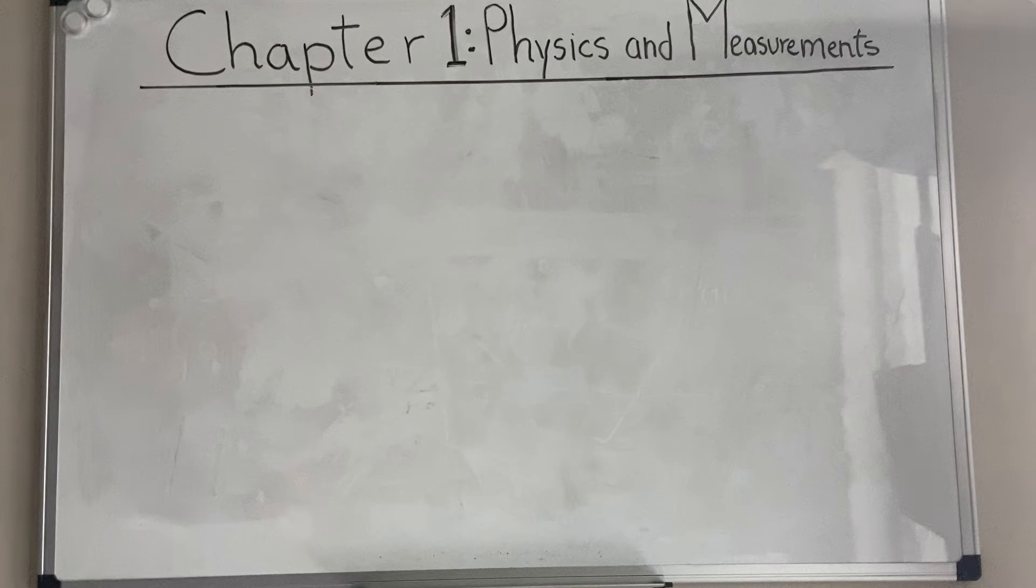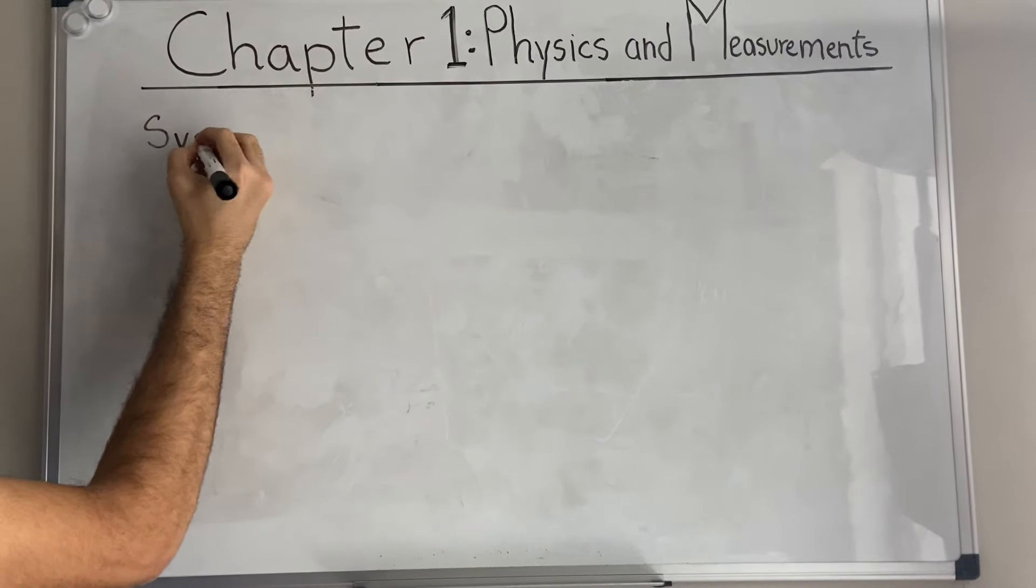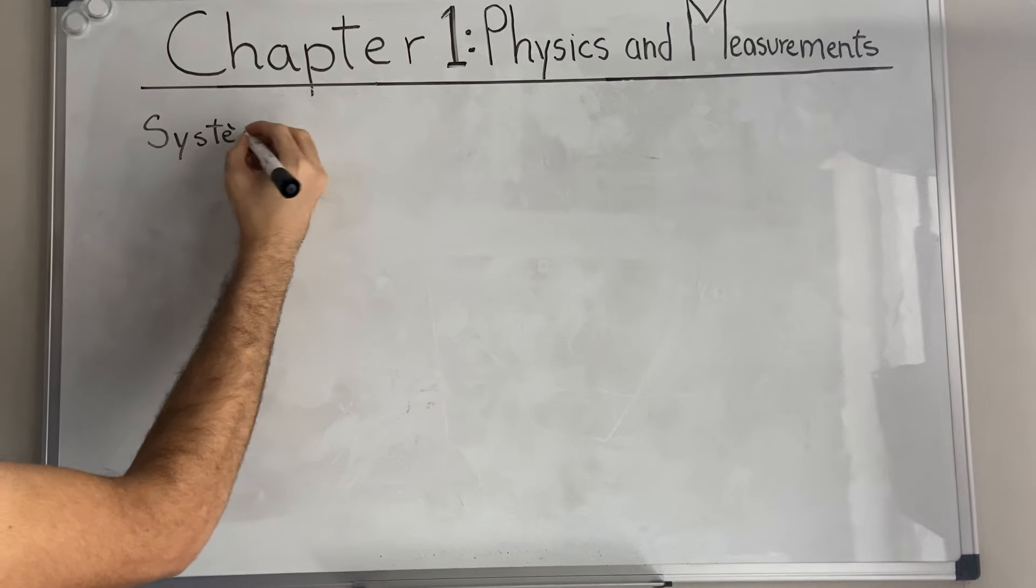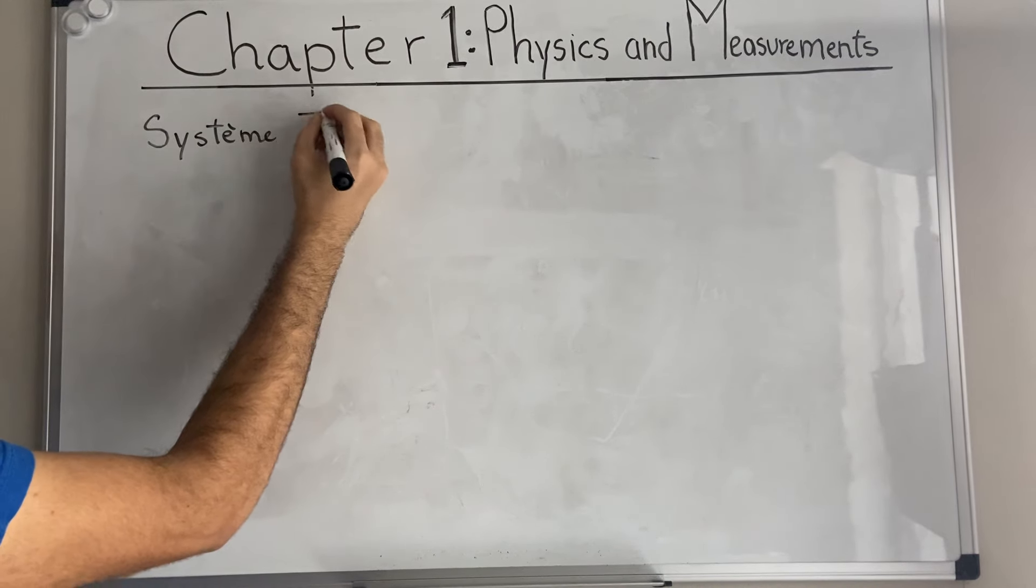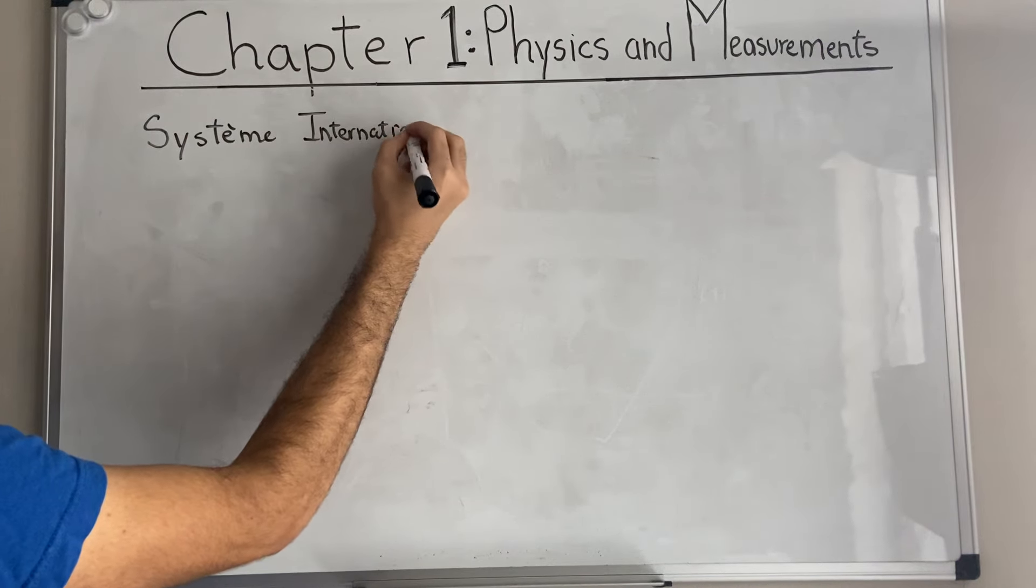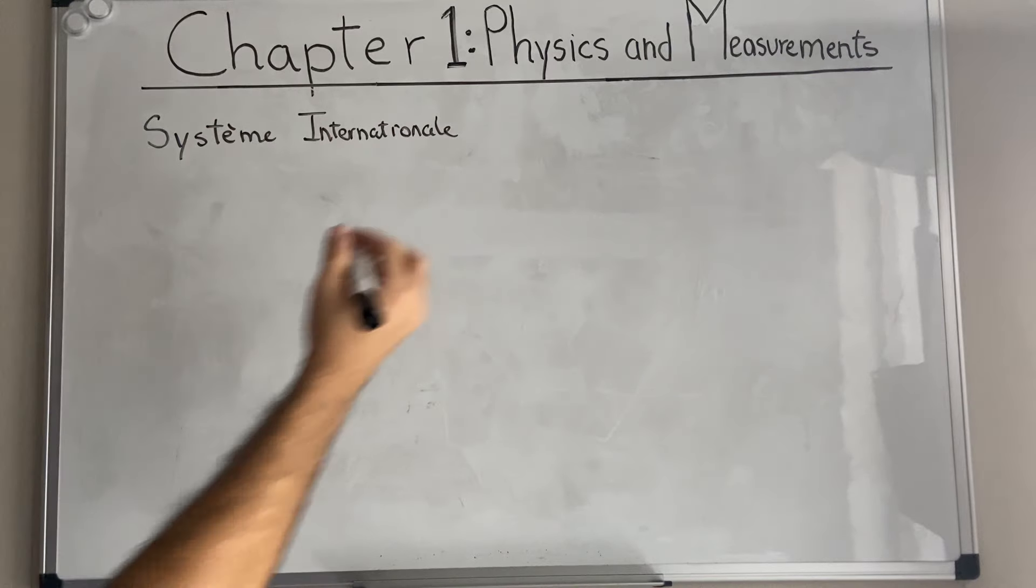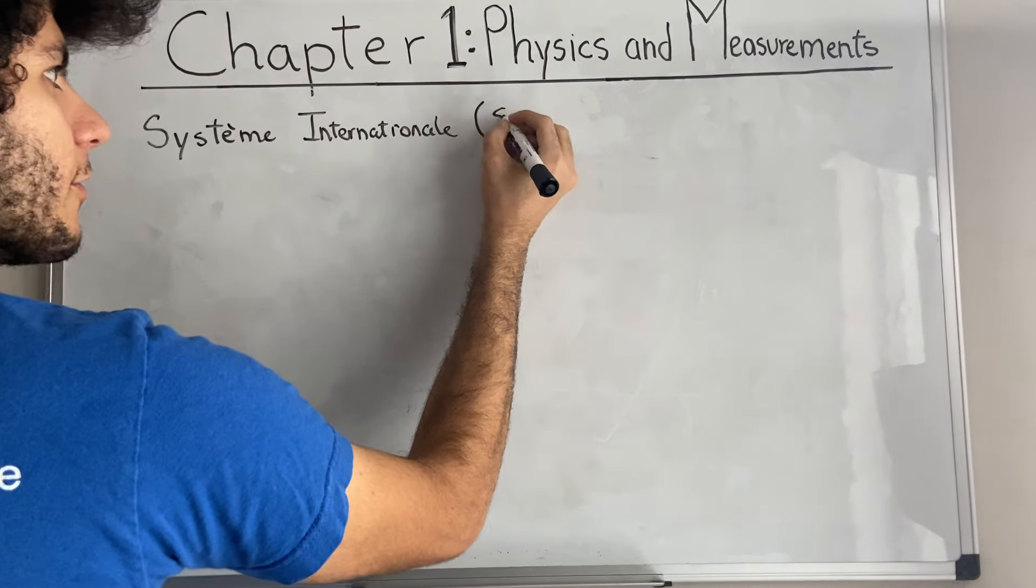First of all, the first part of Chapter 1 discusses measurements. In 1960, an international committee established a set of standards for fundamental quantities of science. It is called Système International, which is French for International System. We usually call this SI, and you're going to hear this a lot in your physics course.